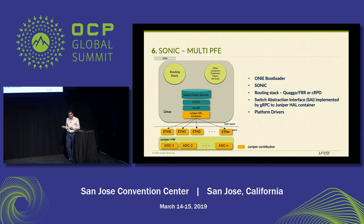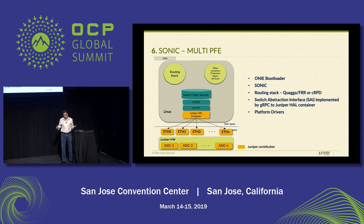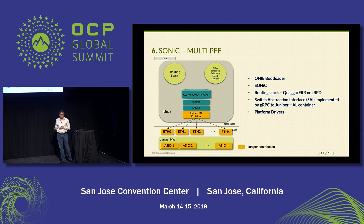Extending Sonic, we have been working on supporting multiple ASICs connected through a fabric, and being able to support both a fixed form factor as well as a chassis-based subsystem. The work we've done here is to take the SAI API and use a gRPC interface to talk to a Juniper HAL container that then abstracts out the line card or the multi-slot awareness in a chassis. This is something we've been able to demo — please stop by and we can talk to you more about how this is implemented and the Juniper ASICs we support this on.